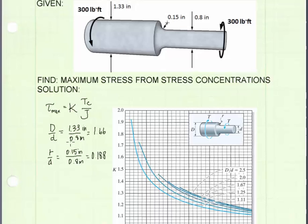We've got our two ratios that we need to use this chart to find our multiplier K. The first ratio is the large diameter to small diameter. From the geometry shown above we get a value of 1.66. And for a ratio of r over small diameter, that's r is the fillet radius, we get a value of 0.188. We'll use this information to find a K value on the chart.